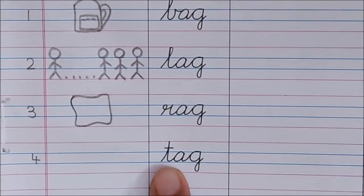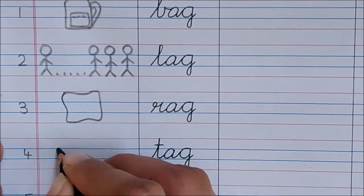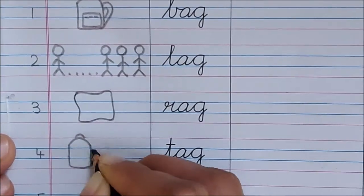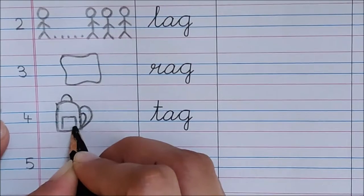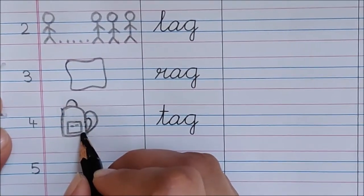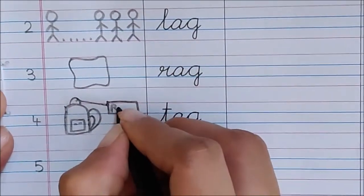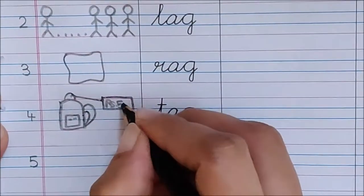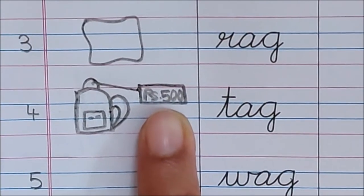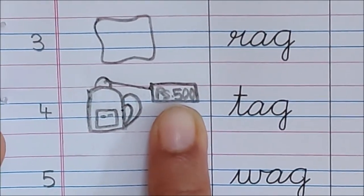Now let us read the next word. T, A, G, Tag. Your mama went for shopping. She wanted to buy a bag for you. This is a bag. She saw a beautiful bag for you. It has a pocket also. Now mama decided to buy this bag for you. She wanted to know the price of this bag, so what did she do? She checked the tag on the bag.